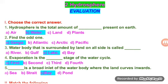Find the word Ganga. Water body that is surrounded by land on all sides is called lake. Evaporation is the first stage of the water cycle. Bay is a broad inlet of the water body where the land goes inwards.